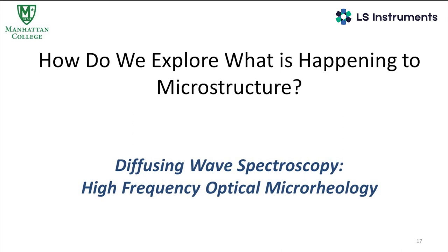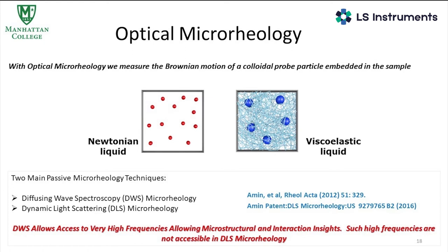This is published and you can look at this study in the International Journal of Cosmetic Science, published last year. The key question is: how do I know what is happening to the microstructure? This is critical for establishing the structure-property and physical-chemical property relationship that impacts performance. The first step is to understand the microstructure. Traditional techniques like mechanical rheometry are great for specific systems, but they are limited in the frequency ranges they can access, which limits the insights you can get into microstructure. This is where we start talking about diffusing wave spectroscopy as a high-frequency optical microrheometer.